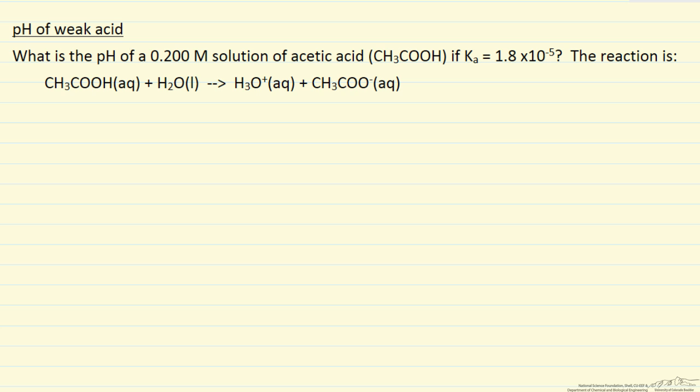We want to calculate the pH of a 0.2 molar solution of acetic acid, and we're given Ka as 1.8 times 10 to the minus 5, and we're given the reaction where acetic acid partially dissociates.